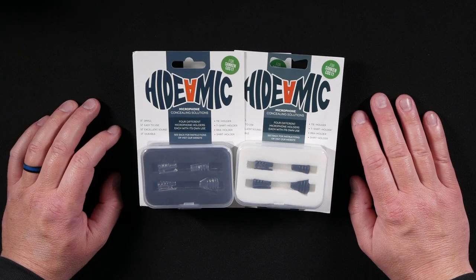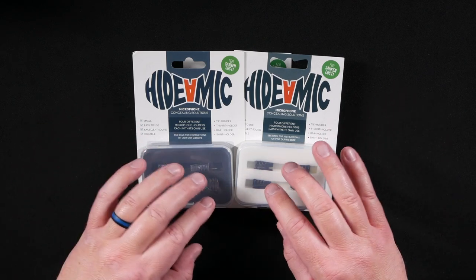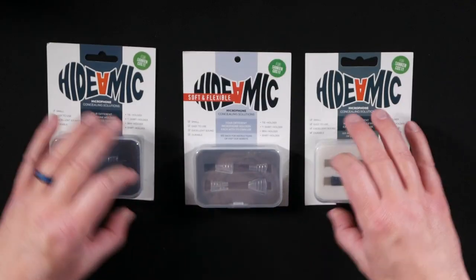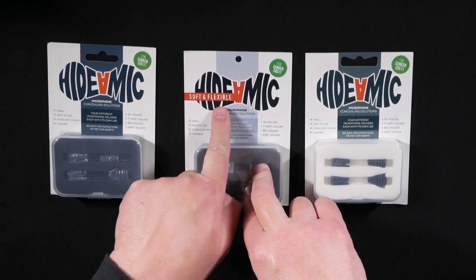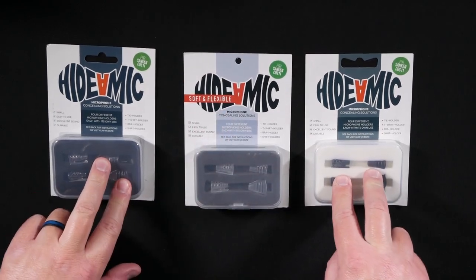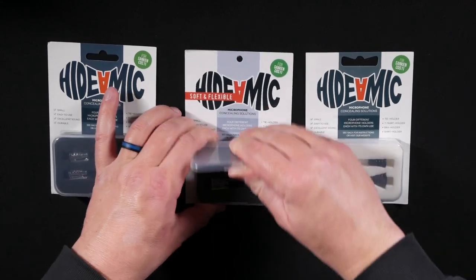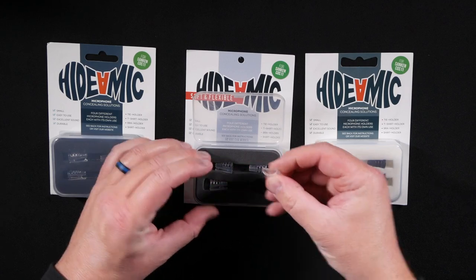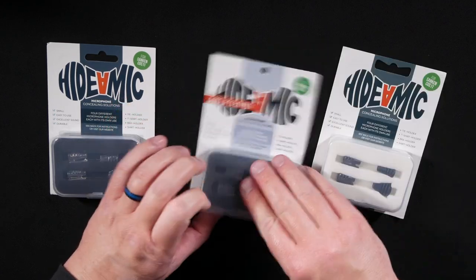Hide-A-Mike got their name for producing a whole bunch of different options for microphone concealment. This here is one of their flagship products, this 4-pack of concealers. They do have, for the COS-11 as of the time of this video, a soft and flexible version as well. These are more hard plastic and the soft and flexible ones are rubber, so you can actually spring them kind of easily and squish it and it comes right back.